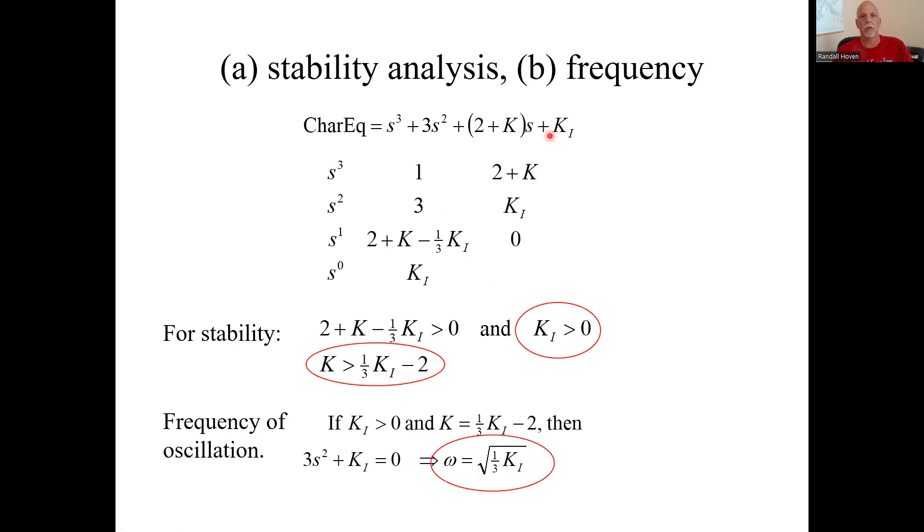Here's the characteristic equation. Set up the Routh array. We can do that arithmetic. You get this. So certainly K_I needs to be greater than zero. And if you do this algebra, it says K must be greater than this. Some function of K_I. So that's the relationship for stability.